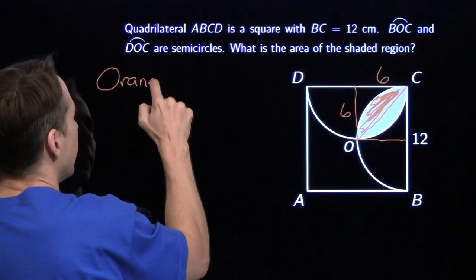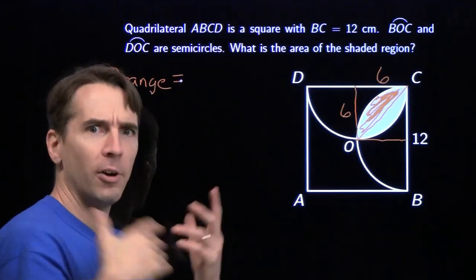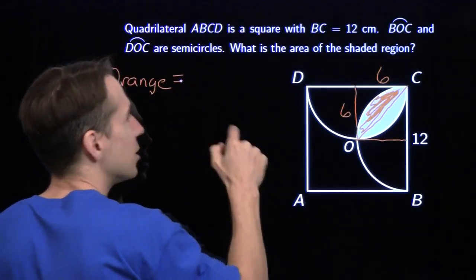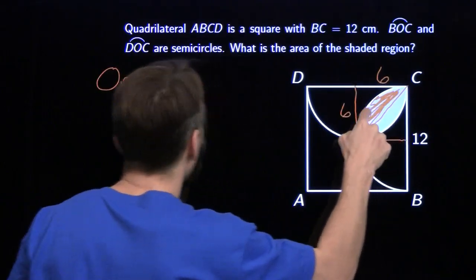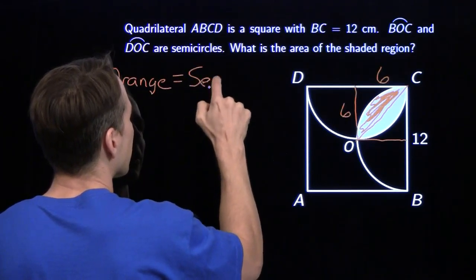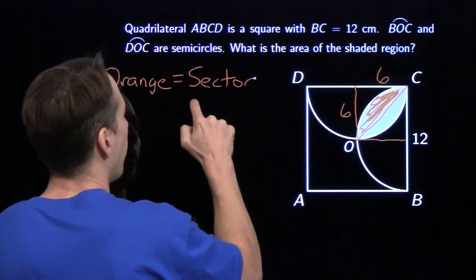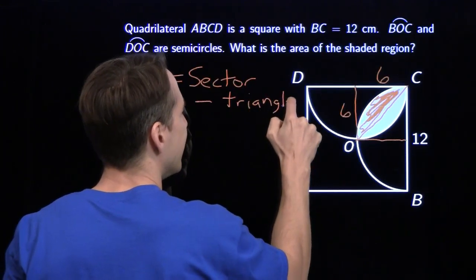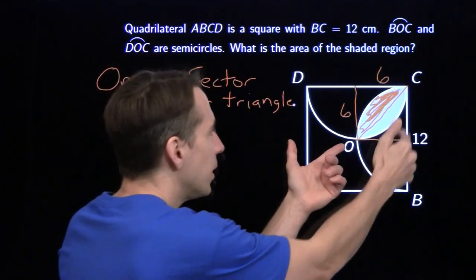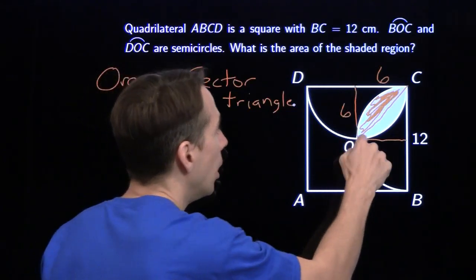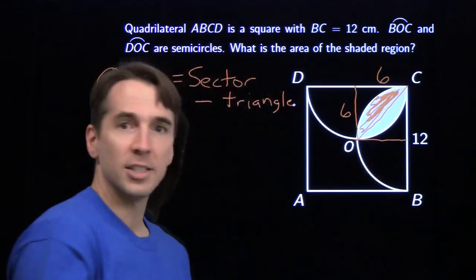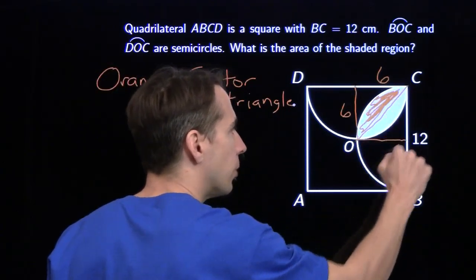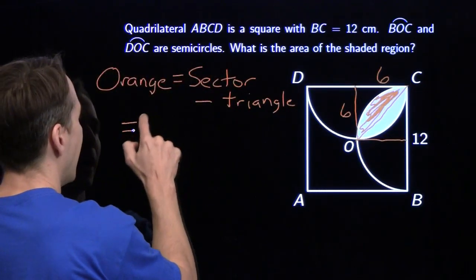I have trouble keeping track of all the information in my head, so I'll often write my plan down just like this. The orange region is the sector minus the triangle. The sector right there is just a quarter circle. The circle has radius 6, so the whole circle would have area 36π, and that quarter circle is just 9π.